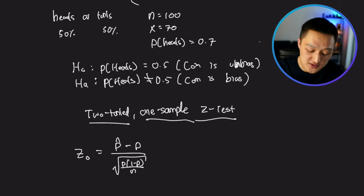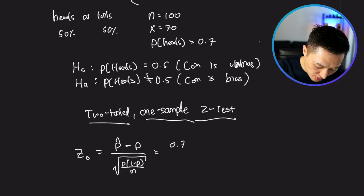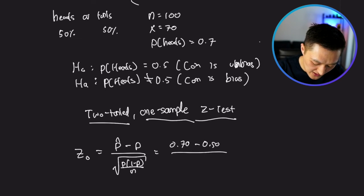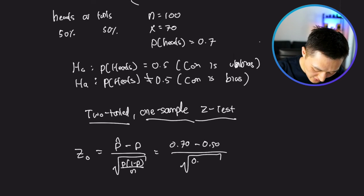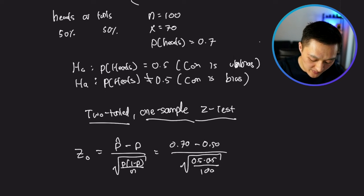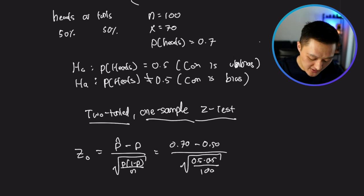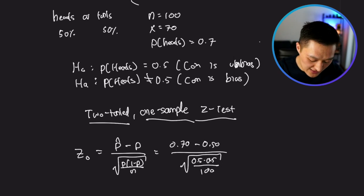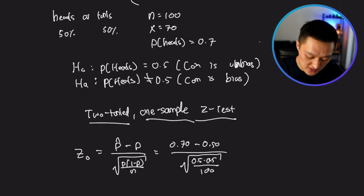Plugging in the values, we get: 0.7 minus 0.5 divided by the square root of 0.5 times 0.5 divided by 100. The numerator compares our observed outcome of 0.7 to the true proportion of 0.5 for an unbiased coin. You might wonder why the variance uses 0.5 and not 0.7 — that's because the z-statistic is based on the null distribution, whose underlying parameter is the null proportion of 0.5.